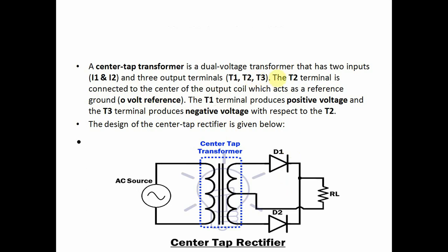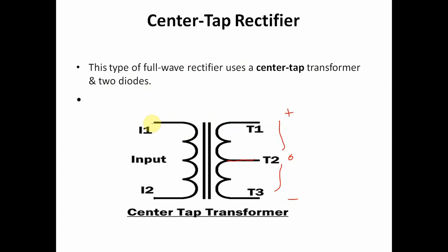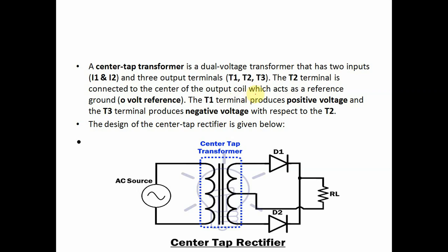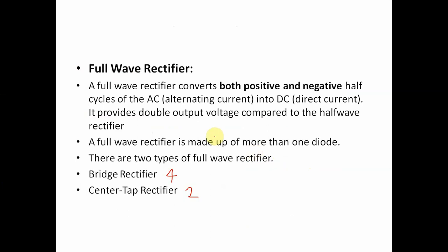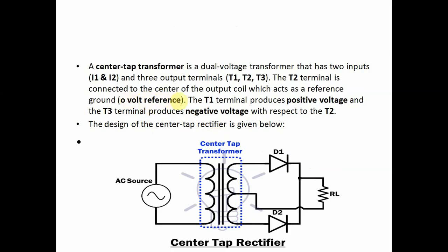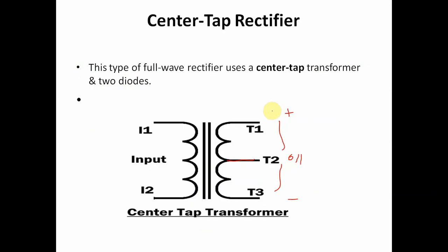A center tap transformer is a dual voltage transformer that has two inputs I1 and I2, and three outputs: T1, T2, and T3. The T2 terminal is connected to the center of the output coil, which acts as a reference ground or zero volt reference. The T1 terminal produces positive voltage and the T3 terminal produces negative voltage with respect to T2.